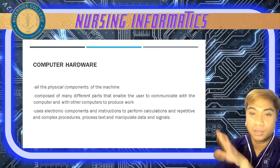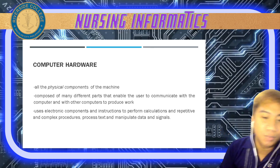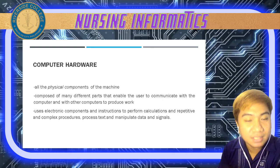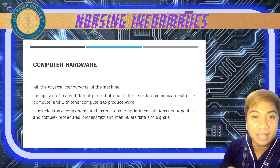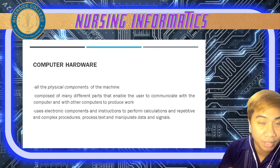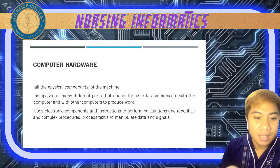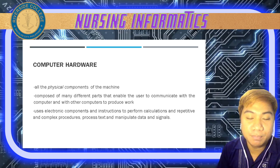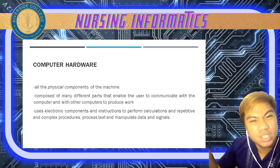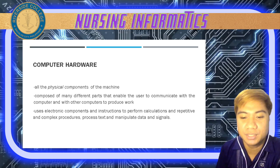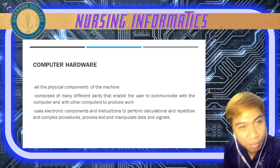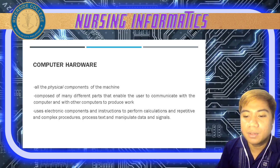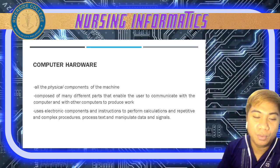Computer hardware includes both your internal and your peripheral hardware. It also includes electronic circuits, processors, and the motherboard of our computer, as well as peripheral devices or extensions of our main computer such as keyboards, mouse, and printer, which we will discuss as we go through the topic.